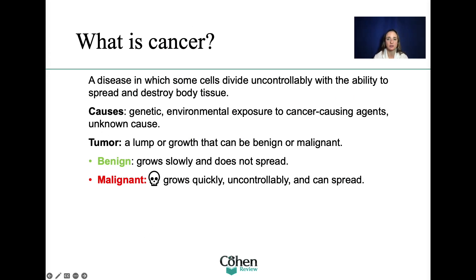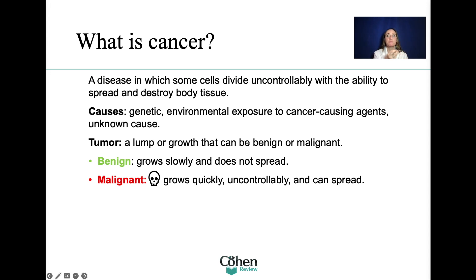What is cancer? Cancer happens because there's a disruption in the DNA of the cells. The DNA is essentially a recipe on how to make the cell, so if there's something wrong with the recipe, there will be something wrong with the outcome — the cell — and the cell will not function properly. That's cancer. That's malignancy.